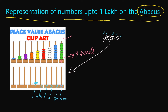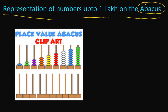On the lakhs place we have one bead, and on the ten thousands, thousands, hundreds, tens, and ones places we all have zero. This is the way we can represent one lakh on the abacus. Not only one lakh — any kind of number can be represented this way. For example, suppose we have the number 3,46,789. We can read this number as three lakh forty-six thousand seven hundred eighty-nine.